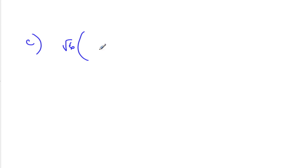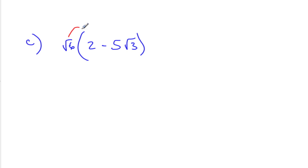One more example. So we have square root 6 times parentheses 2 minus 5 root 3. In doing this, we have to remember some of our algebra properties — we have to distribute the root 6 into both of those terms.